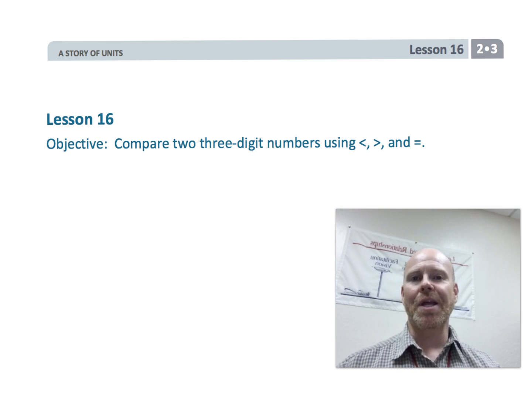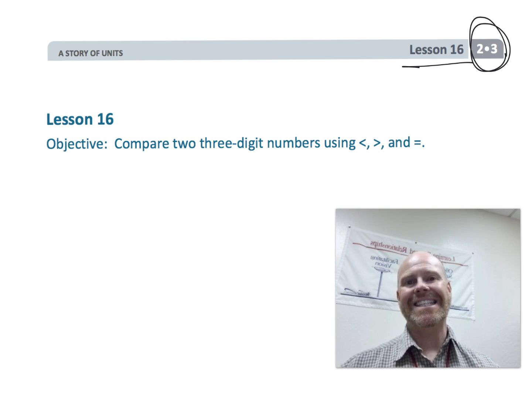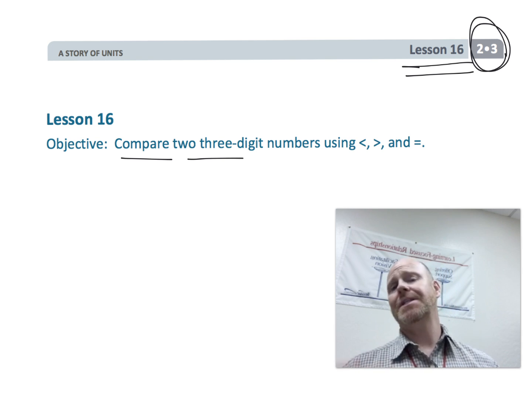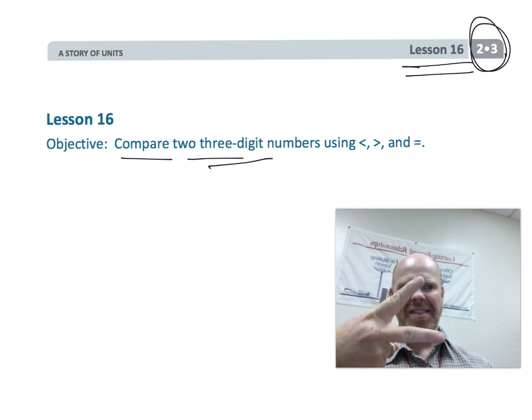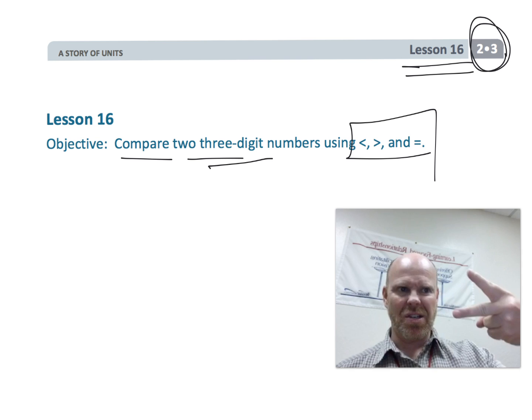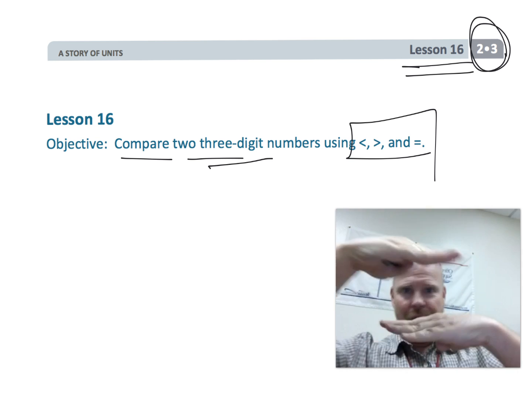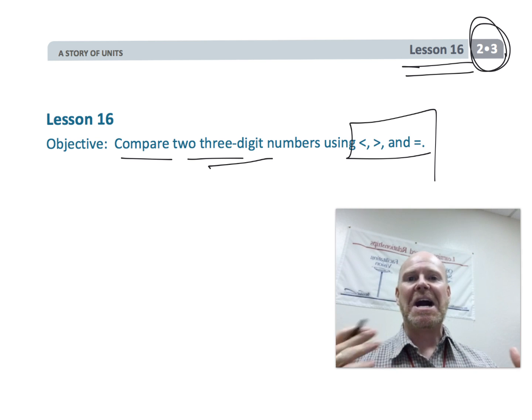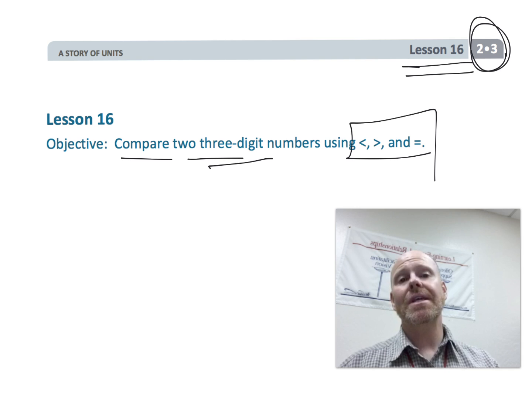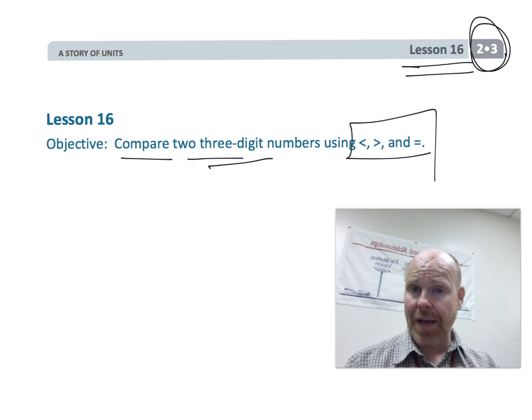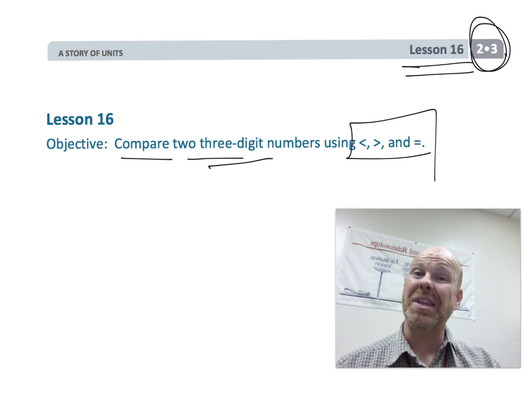Alright, this is second grade module 3, lesson 16. In this lesson we're going to be comparing two three-digit numbers using less than, greater than, and equal symbols. We're going to be using the place value disks to do that, although I'm also going to talk about the empty number line.